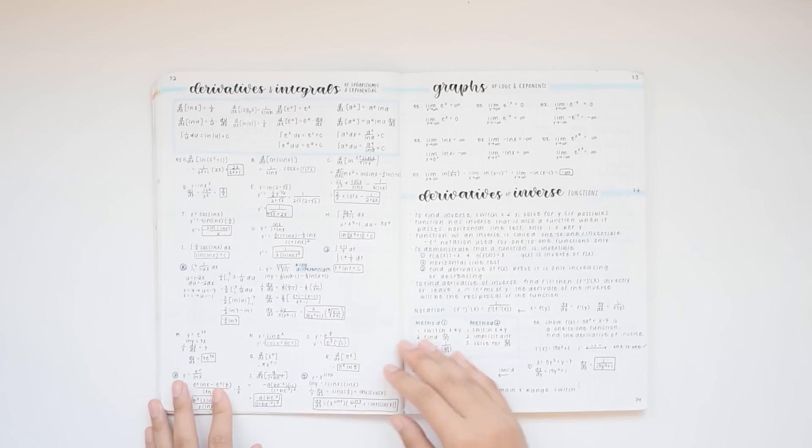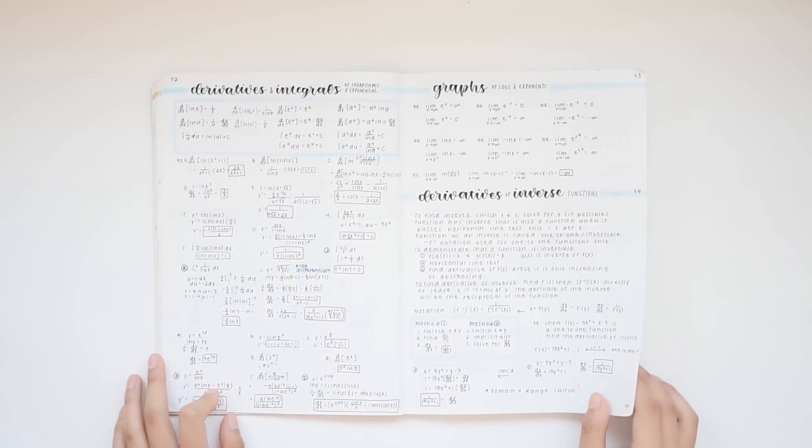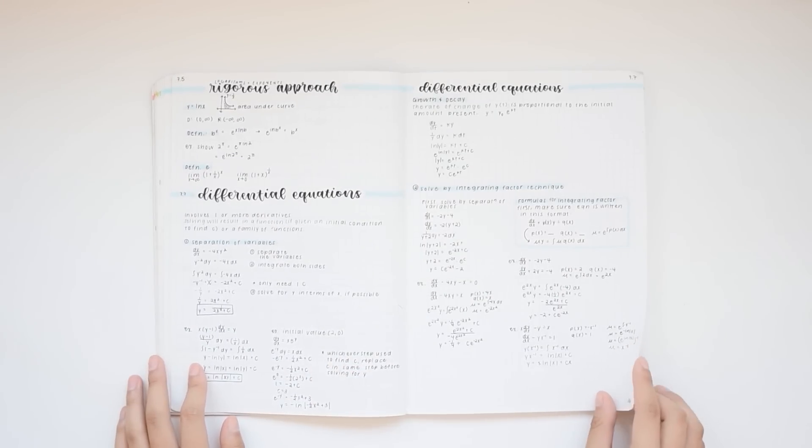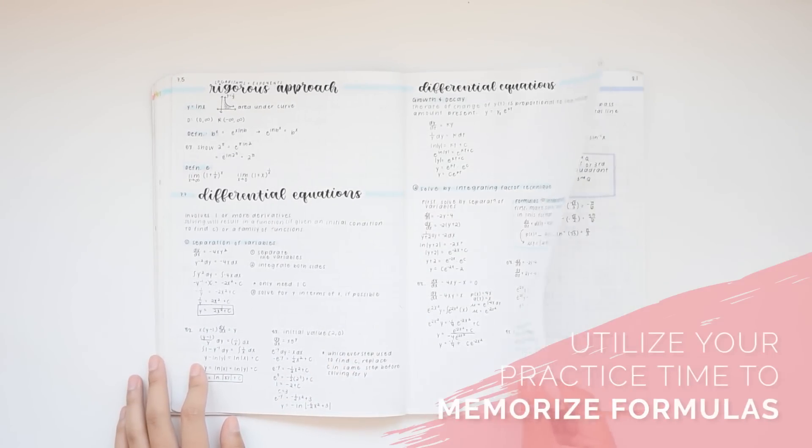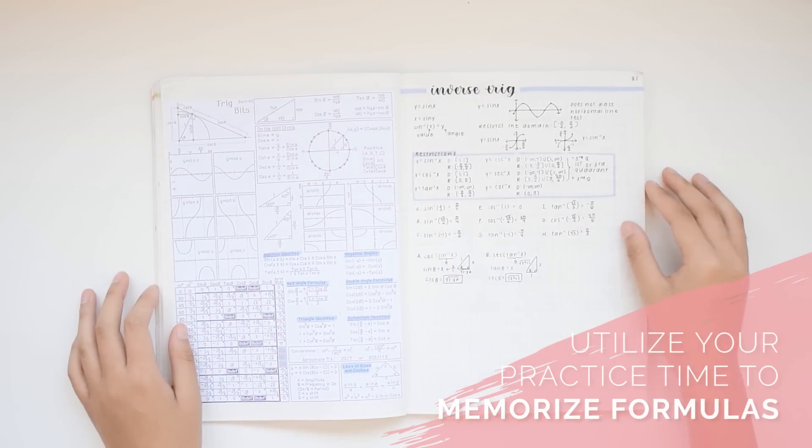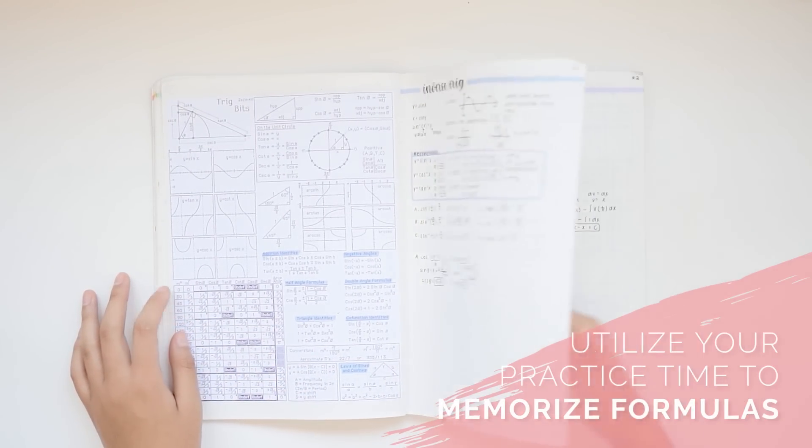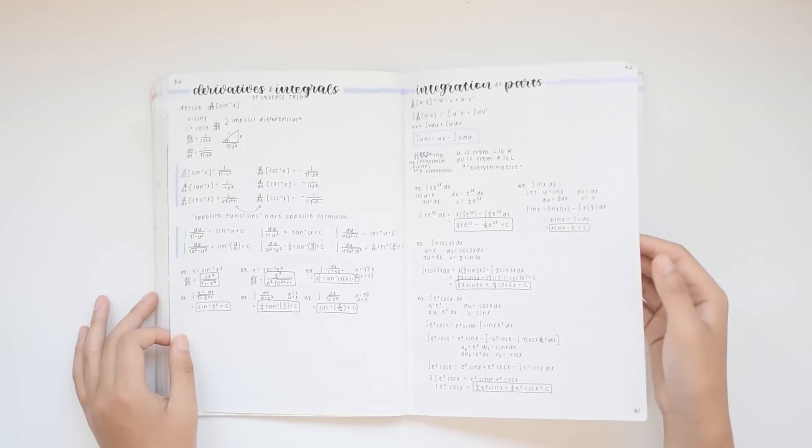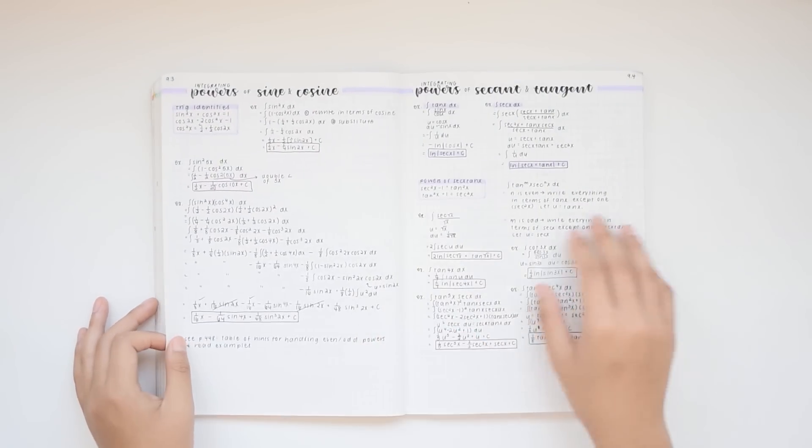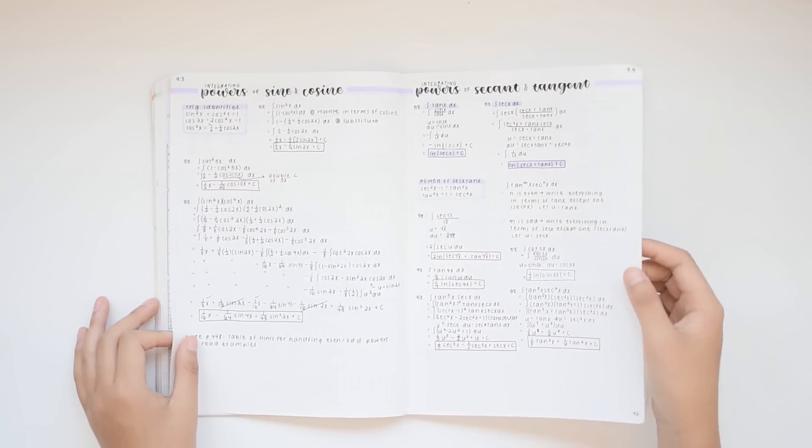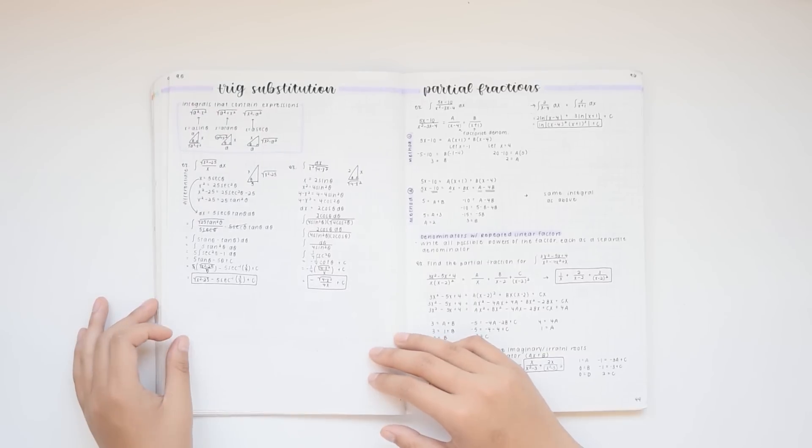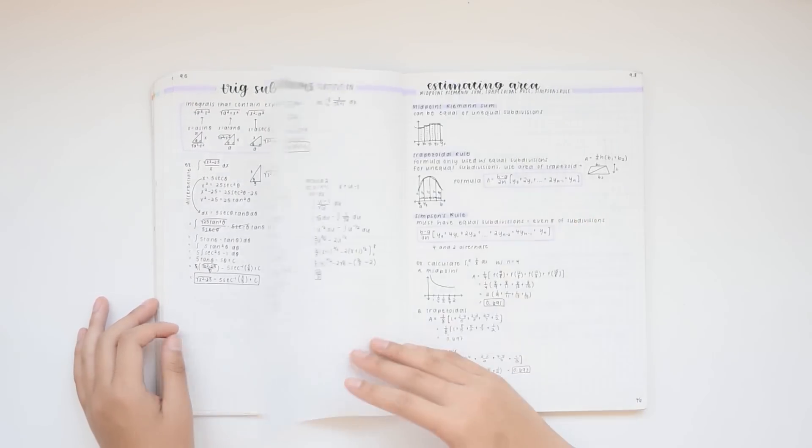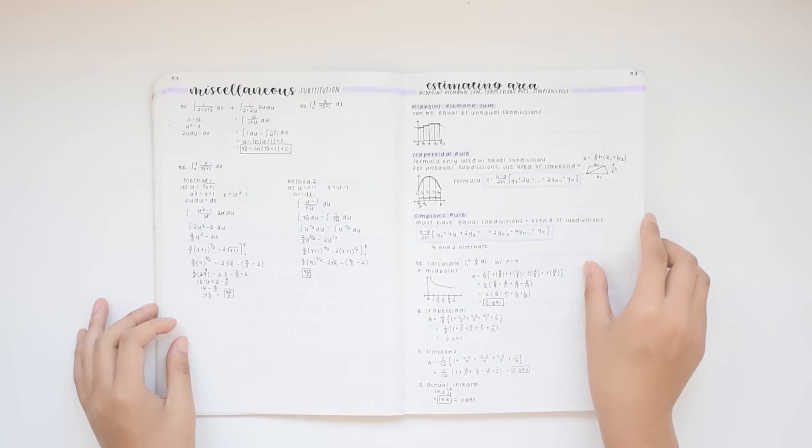Doing those practice questions is great to sharpen your computational and problem-solving skills and they can also help you memorize formulas. One trick to memorize all of the formulas that are necessary for calculus is to write them out completely when you're doing your questions until you're completely confident that you'll be able to remember it. I also recommend making a formula reference section where you just copy down only the formulas from your notes into a separate part of your notebook, and you'll see this towards the back of my notebook as we get farther in through the flip through.